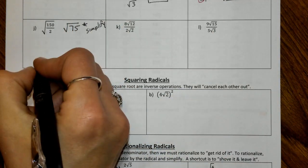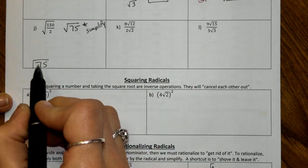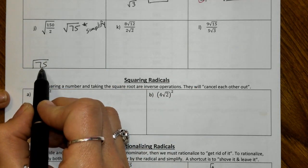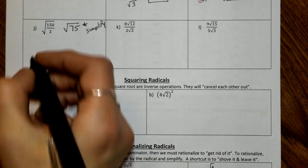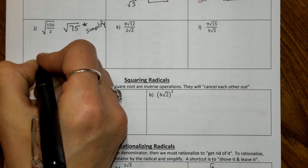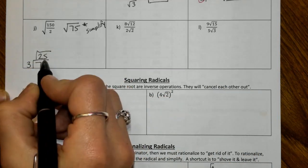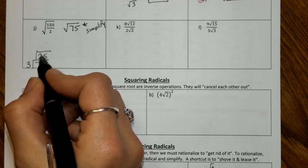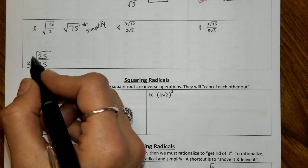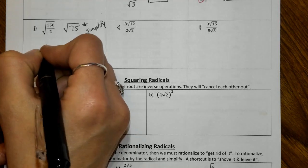All right, with my division tower, the smallest prime number possible. 2 cannot go into it. So we move up to the next smallest prime number of 3, and we can. That's going to get us 25. 25 cannot be divided by 2. The next smallest prime number, 3, can't go into it. The next smallest prime number is 5, and we're going to get 5.